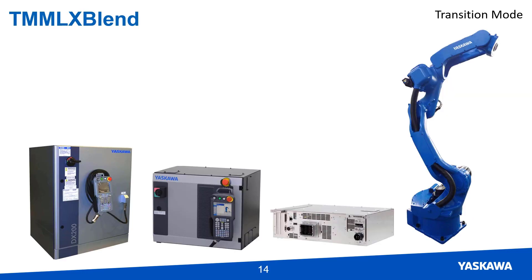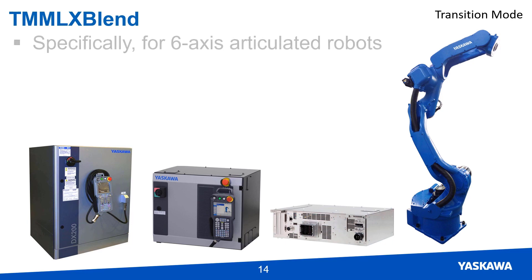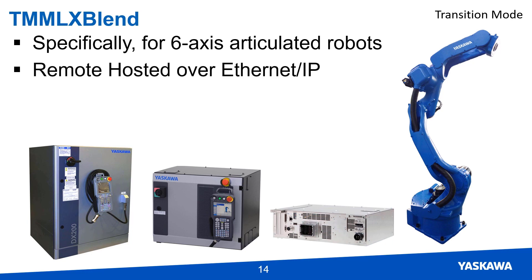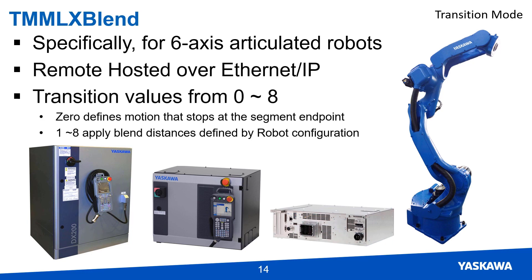The TM MLX transition mode is used specifically for blending two motion segments on six-axis articulated robots that are remote hosted over EtherNet/IP. This transition mode has eight settings that are predefined in the robot controller for blending.